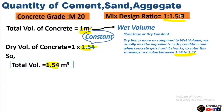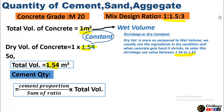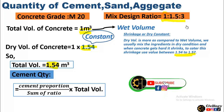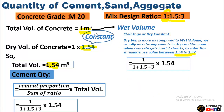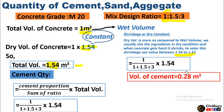This is the volume for which we are going to calculate the quantity of cement, sand and aggregate. To get the cement quantity, we will use the formula: cement proportion divided by sum of ratio, multiplied by total volume. Cement proportion is 1, as you can see here. The ratio is 1:1.5:3, so the sum of ratio is 5.5. The volume of cement for this mix design is 0.28 cubic meters.